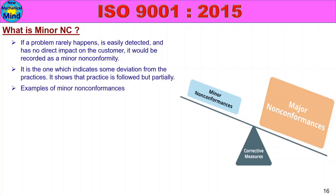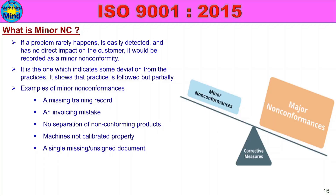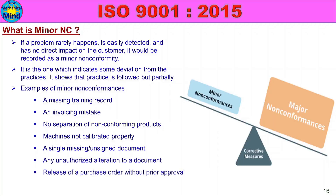Examples of minor non-conformances include: a missing training record, an invoicing mistake, no separation of non-conforming products, machines not calibrated properly, a single missing or unsigned document, any unauthorized alteration to a document, release of a purchase order without prior approval, and using an instrument after its calibration due date.